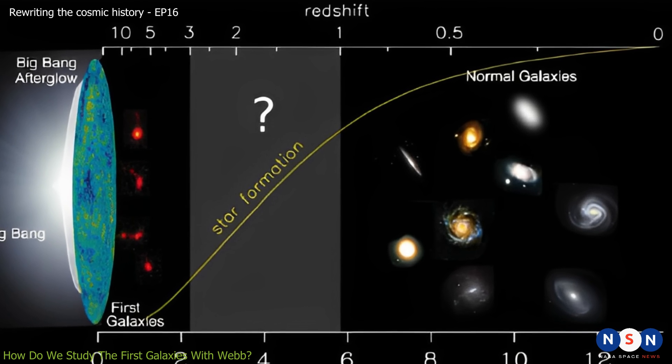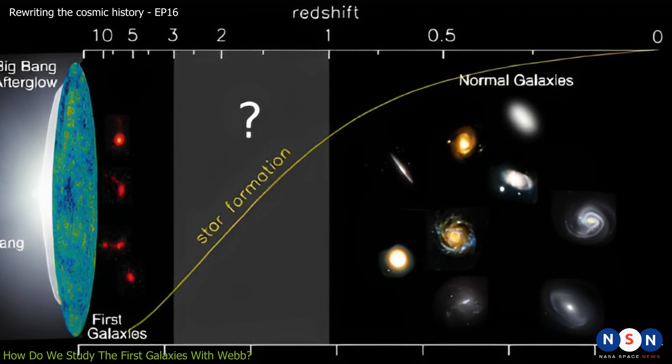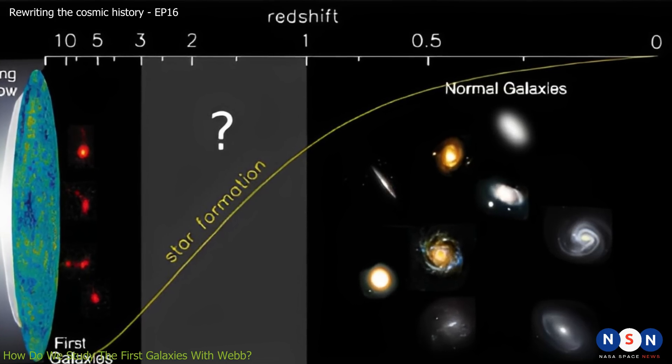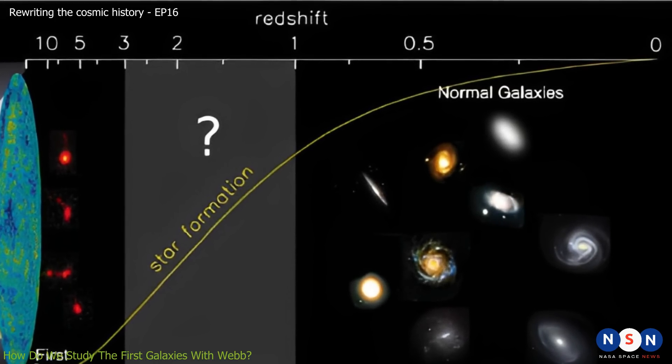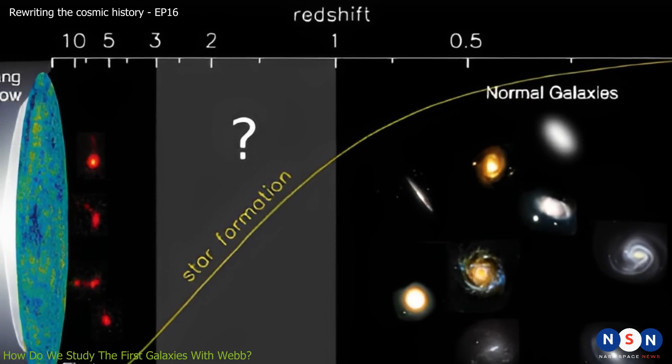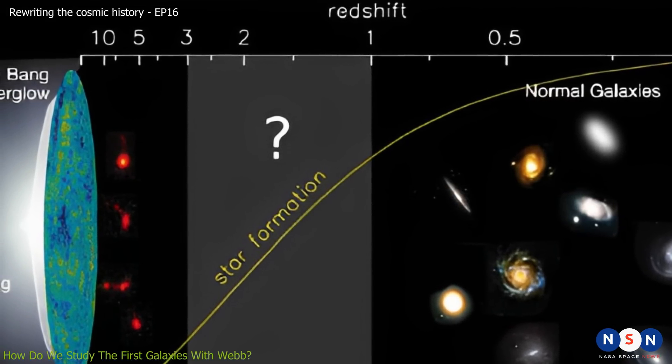For example, a galaxy with a redshift of Z=1 has its light stretched by a factor of 2, meaning that it is twice as far away as a galaxy with Z=0, which is nearby. A galaxy with Z=1 also emitted its light when the universe was half its current age.